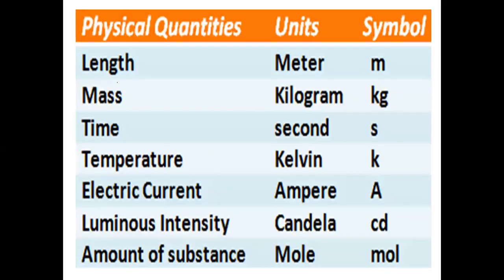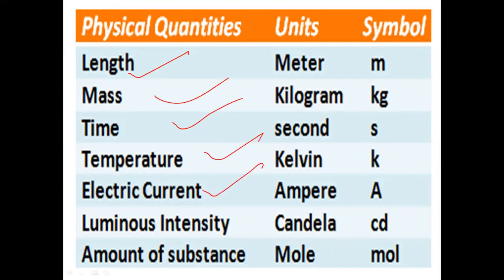Besides length, mass, time, temperature, electric current, luminous intensity, and amount of substance are also fundamental quantities. They are also fundamental quantities because they are independent of other quantities — they cannot be expressed in terms of other quantities.